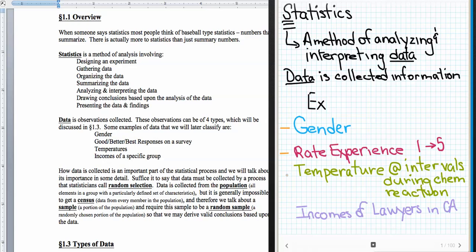Another type of data that you might find would be temperatures measured at certain intervals during a chemical reaction. Now that could be information that came from an actual experiment. It's still observational, but the experiment could have caused temperature changes by creating that chemical reaction. Another type of data that you might come across would be incomes of lawyers in California. Maybe someone's doing a study about lawyers' incomes for a law school so that someone can have an idea of, okay well if I want to become a lawyer where am I going to live in California.